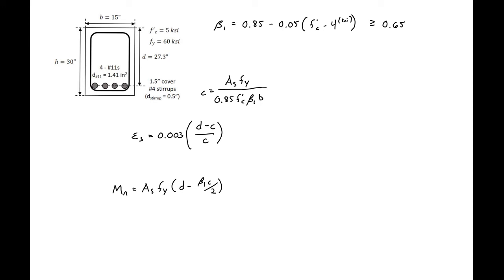We'll next find our nominal capacity of our actual section. We need to first find our beta 1. We remember we have 5 KSI concrete, so we'll have a beta 1 equal to 0.8. We can plug all of our values in and find our C, which we remember C is based on equilibrium, so tension equal to compression. We'll have AS, 6.24 square inches, FY, 60 KSI, 0.85, F prime C, 5 KSI, beta 1 point 8, and B, 15 inches. We'll find our C to be 7.3 inches.